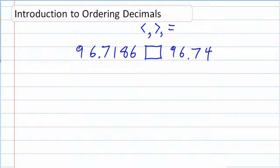We're now going to be ordering decimals or comparing decimals to see basically which of two decimals is bigger. I like to think of this as a competition. I've got two digits here, 96.7186 and 96.74.